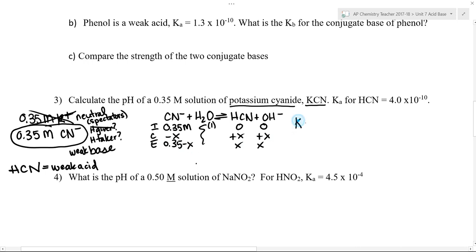Then I can write a K expression for this reaction. It is going to be products over reactants. I can plug my values into my K expression. That's X squared over 0.35 minus X. And now all I need is a K value in order to solve for X here.